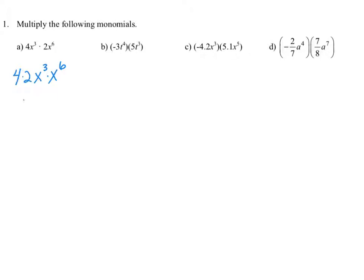When we multiply 4 times 2, we get 8. And x to the third times x to the sixth — we're using the product rule, where we add the exponents together. So our solution is 8x to the 3 plus 6 power, or the ninth power, which simplifies to 8x to the ninth power.